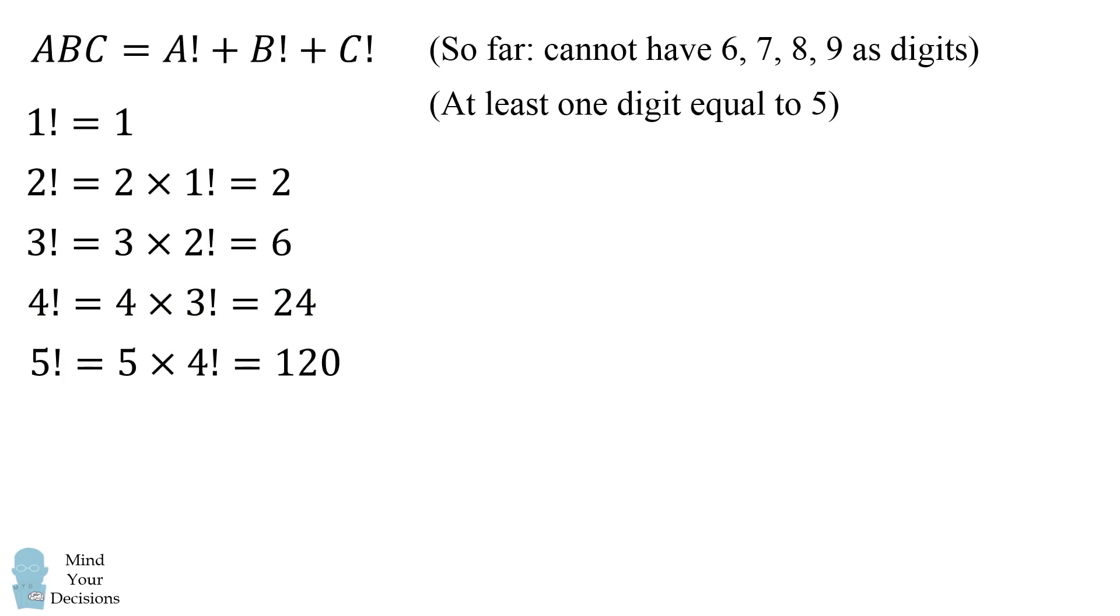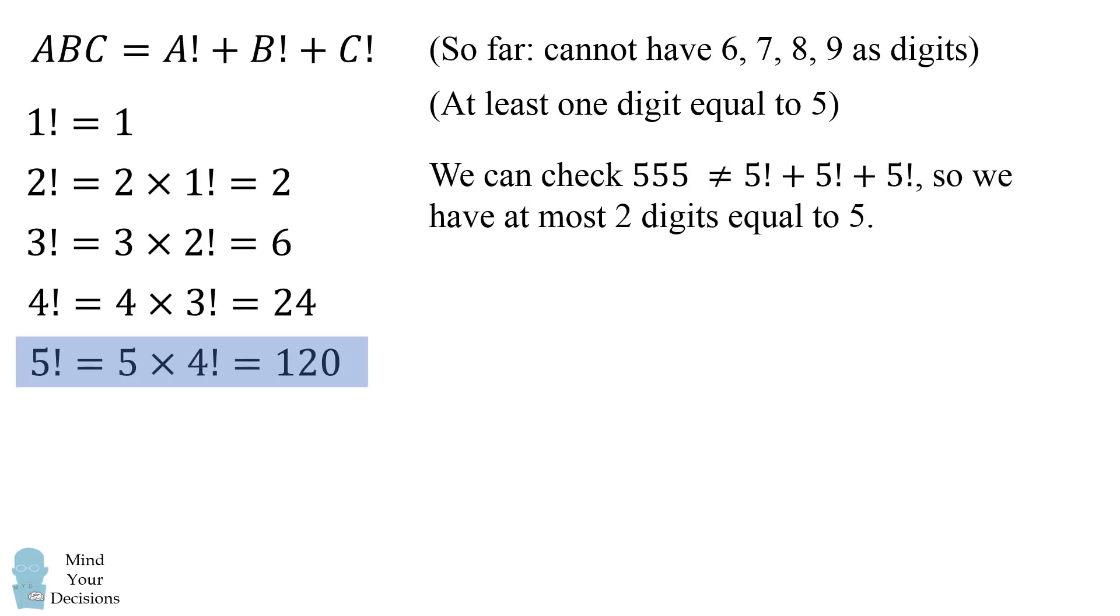So we'll add that to our findings, at least one digit must be equal to five. Now consider five factorial which equals 120. We can check that 555 is not a valid solution, so that means we can have at most two digits equal to five.